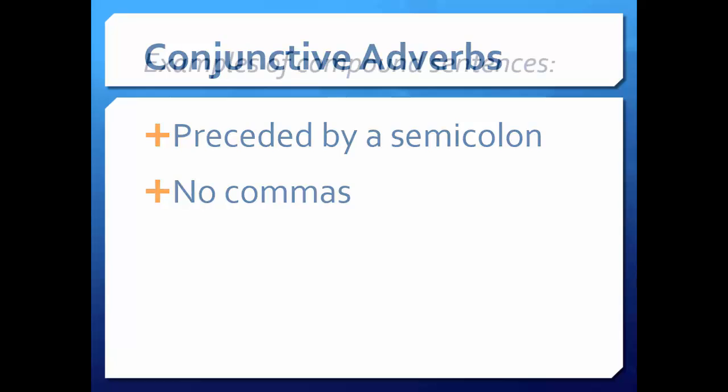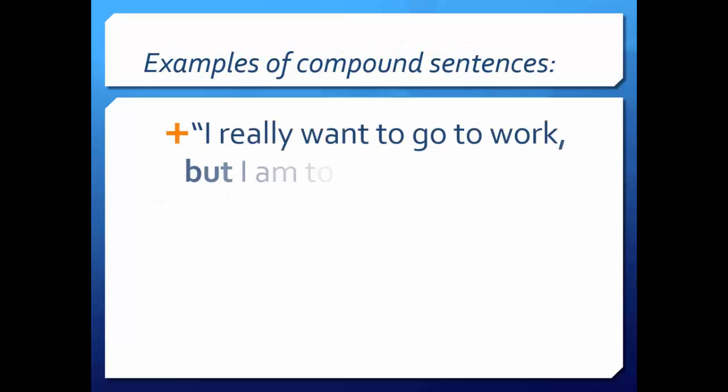One example of a compound sentence is: "I really want to go to work, but I am too sick to drive." This sentence contains two independent clauses — "I really want to go to work" and "I am too sick to drive" — and combines them with the coordinating conjunction "but."